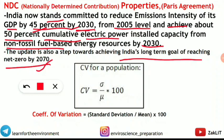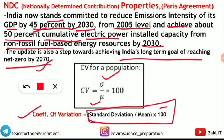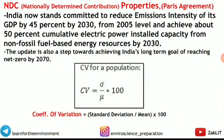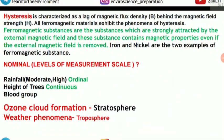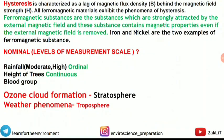The coefficient of variation question was straightforward — just apply the formula: CV = (standard deviation ÷ mean) × 100. Those who applied this formula correctly would have scored full marks.